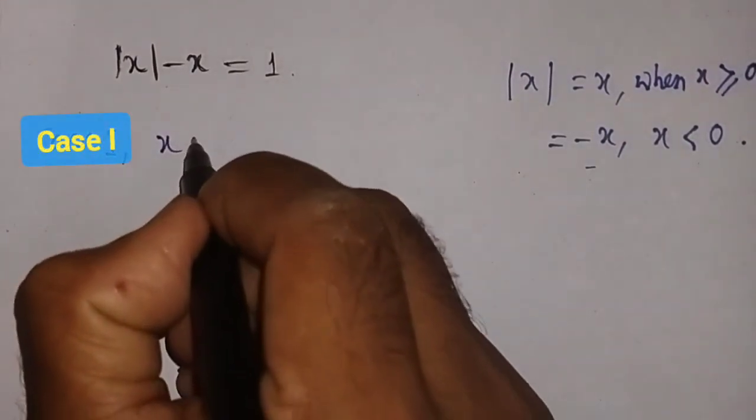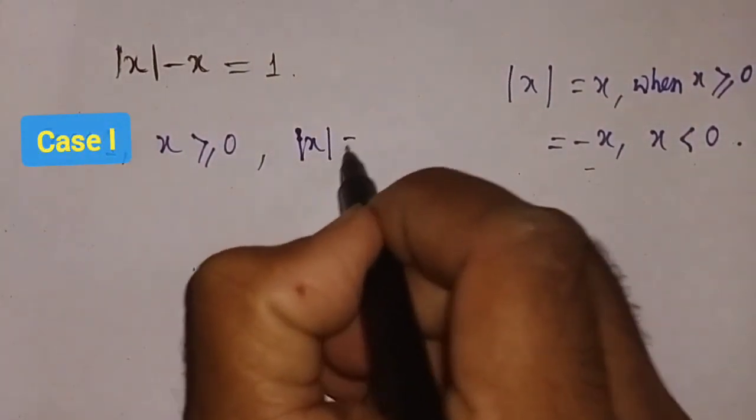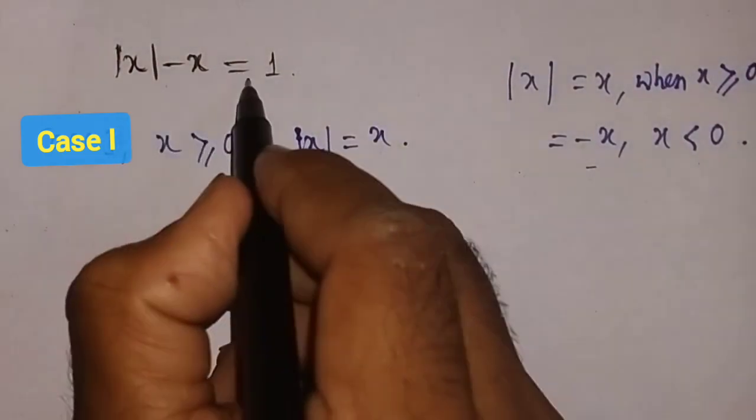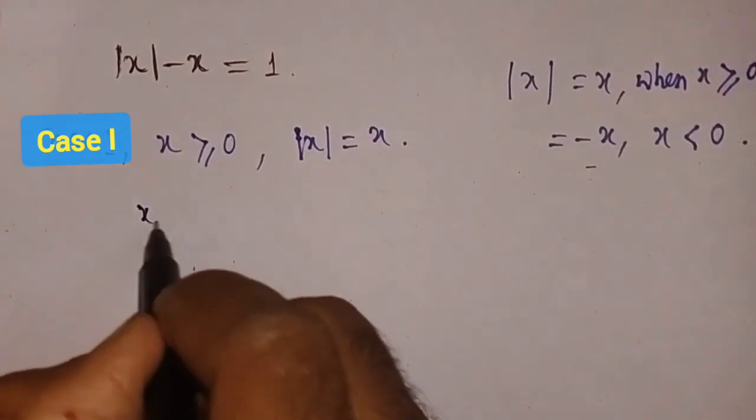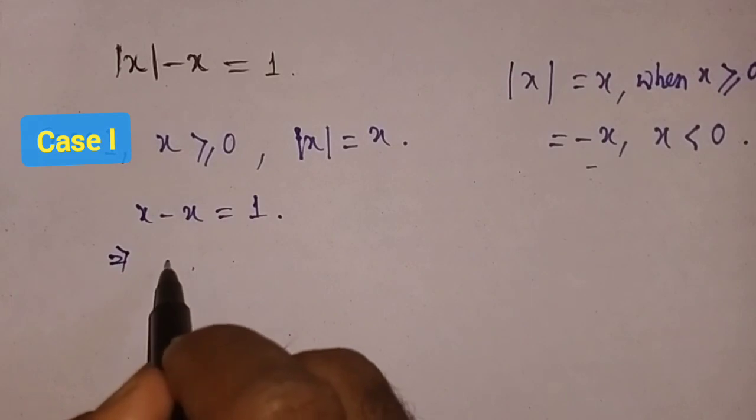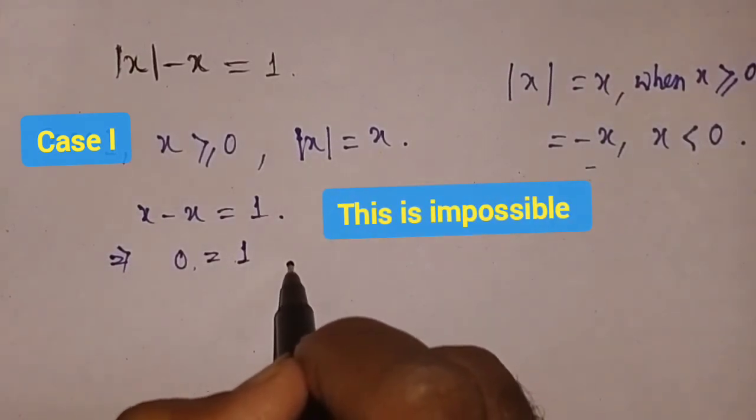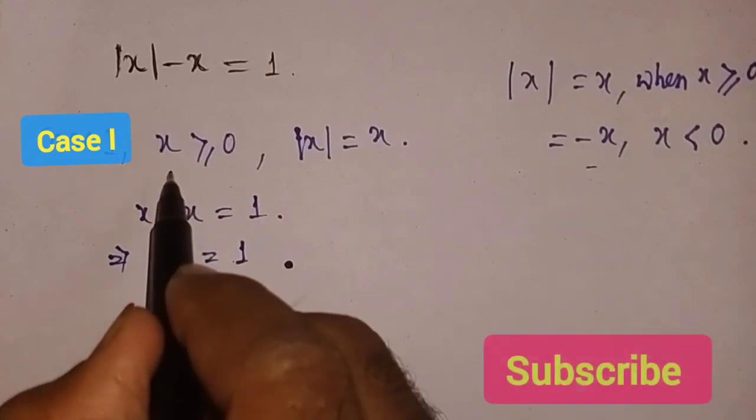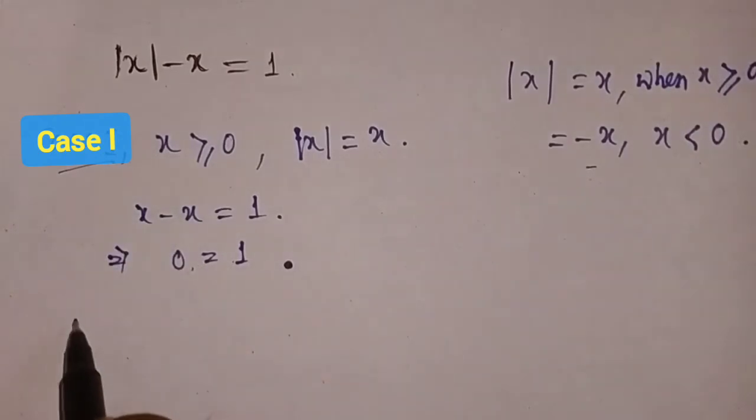when x is greater than or equal to 0, |x| equals x, and then the equation reduces to x - x = 1, which implies 0 = 1. This is impossible. So values of x greater than or equal to 0 cannot be solutions of this equation. Now in case 2,